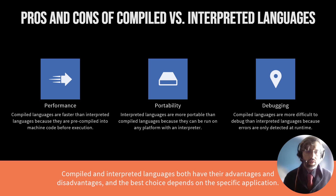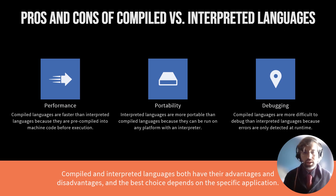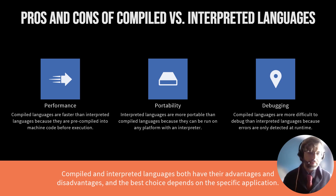There are some pros and cons of compiled versus interpreted languages. Compiled languages tend to be much faster because they're pre-compiled into machine code before being run. However, this isn't always the case — for example, if we have to boot something like the Java Virtual Machine, that might take longer, even though Java is not the same type of interpreted language as Python, which executes much quicker.